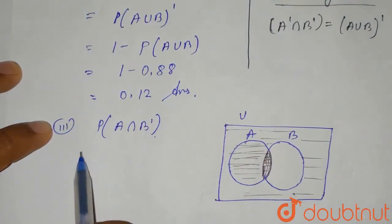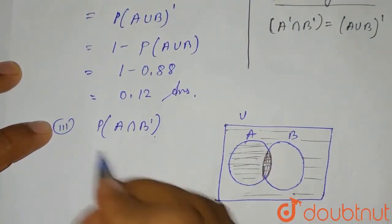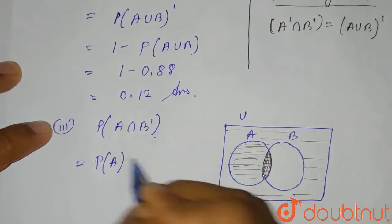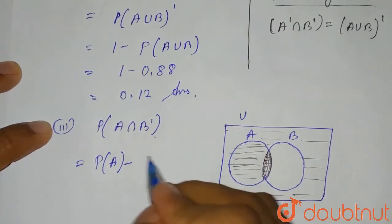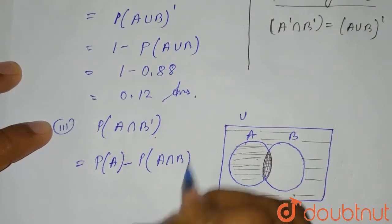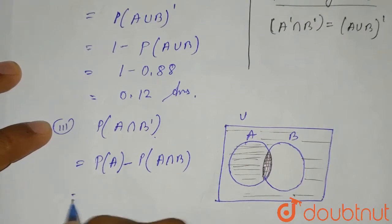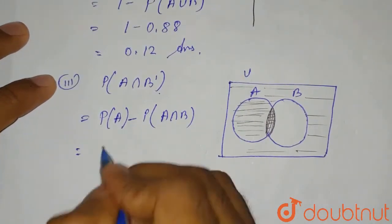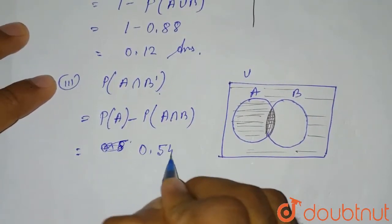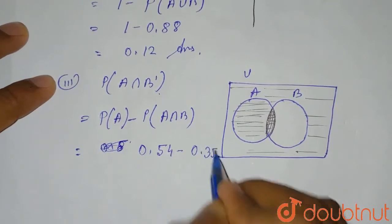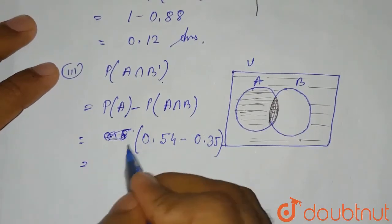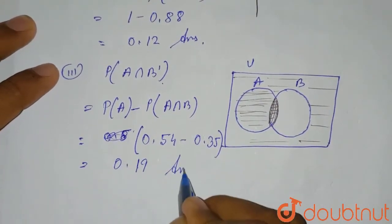So P(A∩B') = P(A) − P(A∩B) = 0.54 − 0.35 = 0.19. This is the third answer.